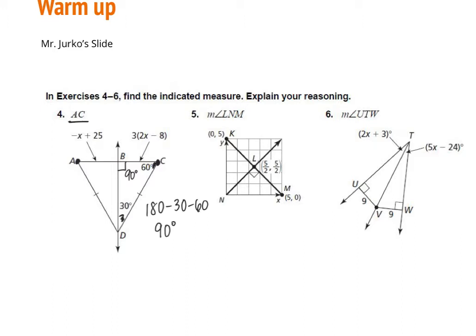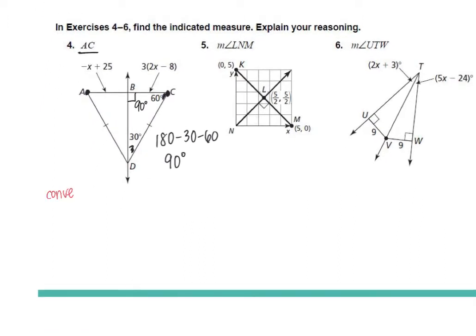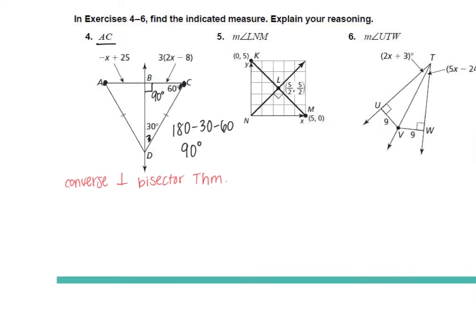We're using the converse perpendicular bisector theorem. Remember, if we were told that this was congruent to this, then we're using the regular perpendicular bisector theorem — because we know it's a bisector since it cuts that side in half, and we know it's perpendicular. But if we're given these two sides, we don't know right off the bat that it's a bisector, so we have to use the converse perpendicular bisector theorem.